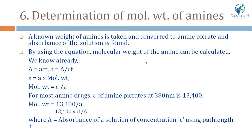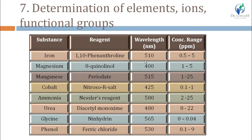Sixth application — determination of molecular weight of amines: amines are first converted into amine picrate, and then absorbance of the amine picrate solution is measured. Using A = εCT, where the molar extinction coefficient (ε) for most amine drugs is 30,400 at 380 nm, we can calculate molecular weight. Seventh application — determination of elements, ions, and functional groups: a reagent or chromogen is used to produce color, and several elements, ions, or functional groups can be determined quantitatively even at low concentrations using specific or non-specific color-producing reagents known as chromogenic agents. For example, for magnesium, 8-hydroxyquinoline is used; for manganese, periodate is used.